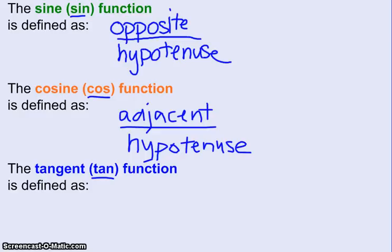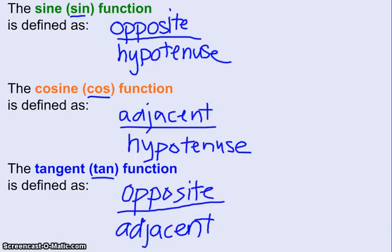And lastly, the tangent, opposite over adjacent. So we have our three trig functions: sine as opposite over hypotenuse, cosine as adjacent over hypotenuse, and tangent as opposite over adjacent.